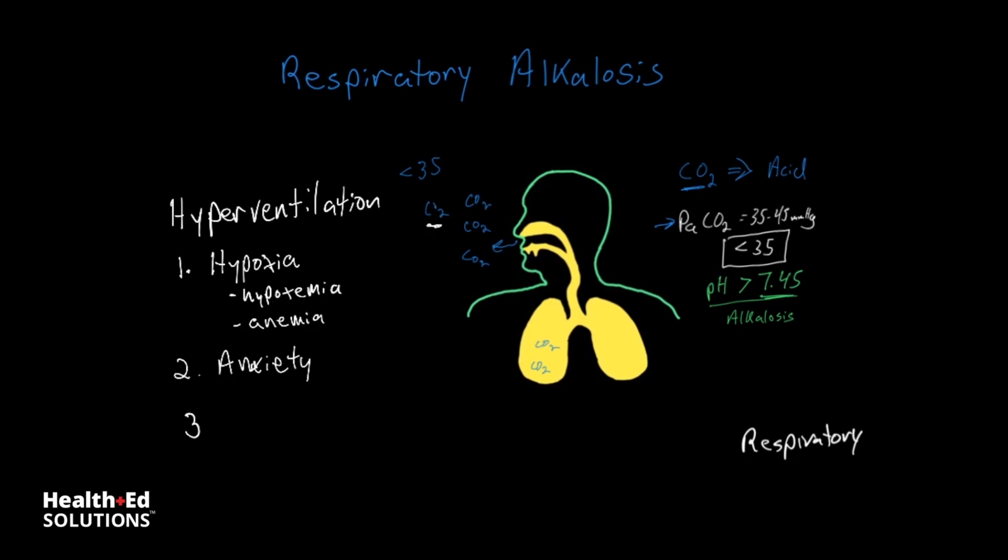It can also become a chronic condition as well. That kind of leads to the third, which is hyperventilation syndrome, which is a chronic cause of respiratory alkalosis. And one of the major causes of this is mental illness, anxiety, etc.